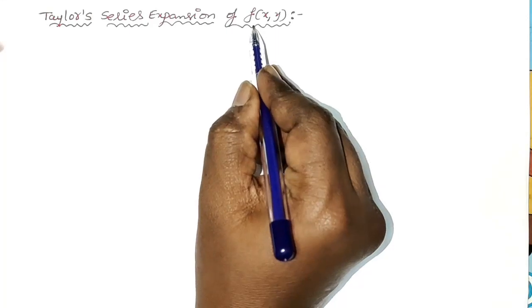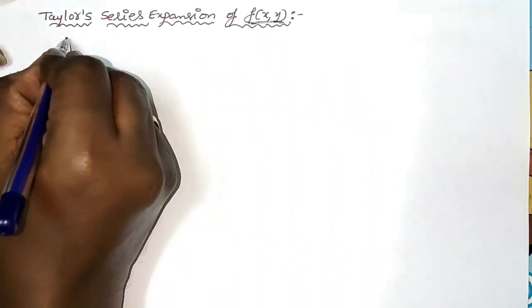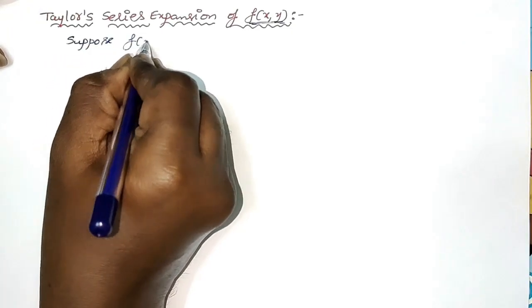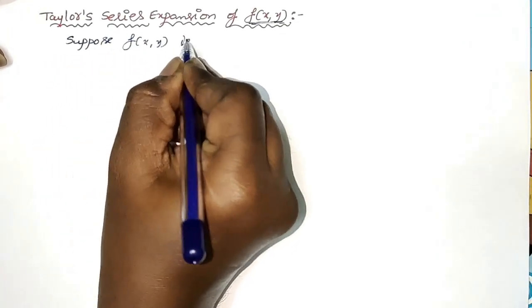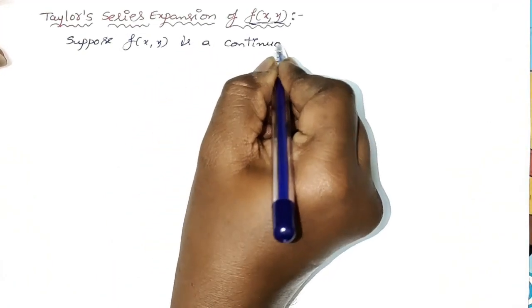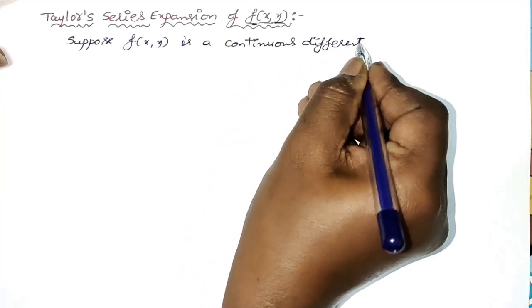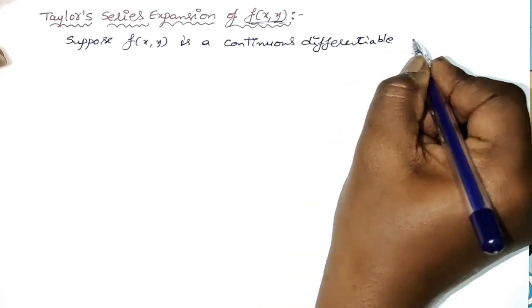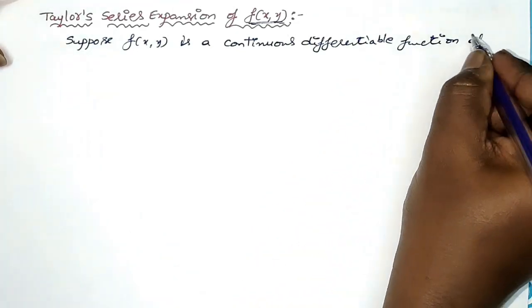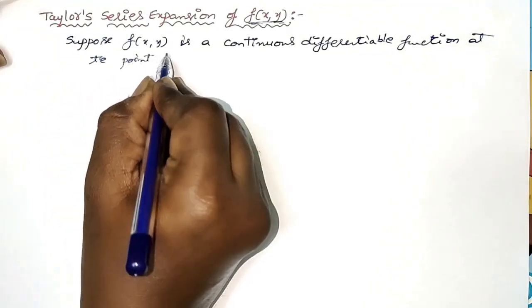You know that a function in two variables is represented by f. Suppose f is a continuous differentiable function at the point (a, b).